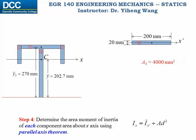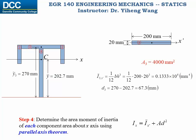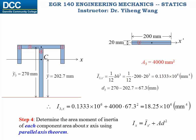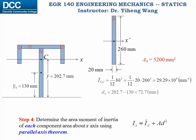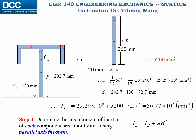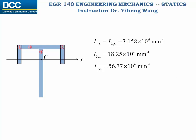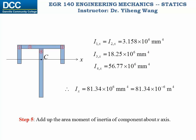We do the same thing for component area three, and then the same thing again for component area four. And lastly, we simply add them all together and get the moment of inertia of this composite area about the x-axis, which is also the centroidal axis of this composite area. That's the answer to this problem.